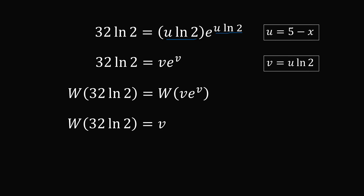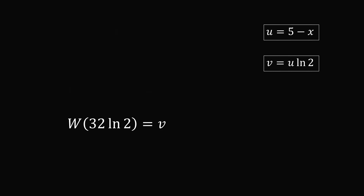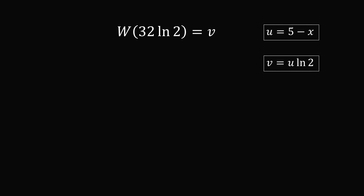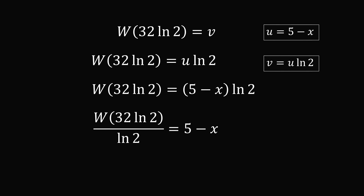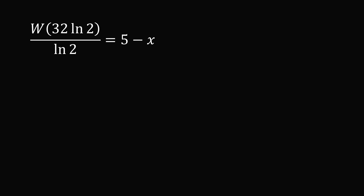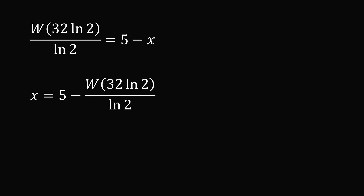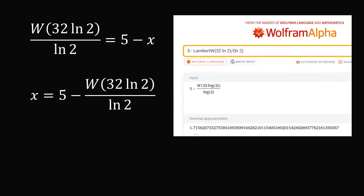All that remains is to substitute back to solve for x. Since v equals u times the natural log of 2 and u equals 5 minus x, we divide both sides by the natural log of 2 and bring the constant terms to the right. The equation becomes x equals 5 minus W of 32 times the natural log of 2, all over the natural log of 2. Inputting this into Wolfram Alpha gives a decimal approximation: x is approximately equal to 1.7156. And that's the answer.